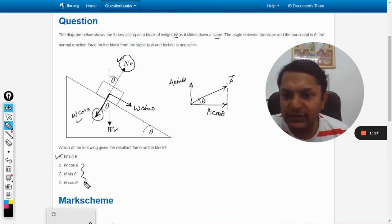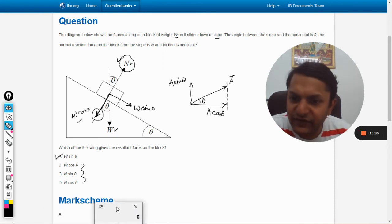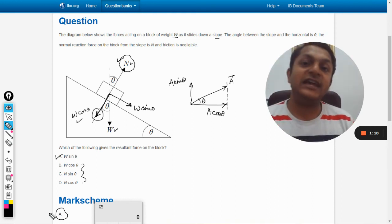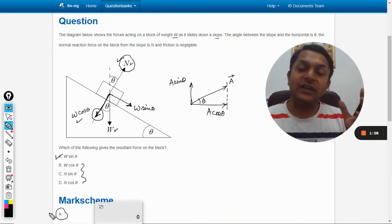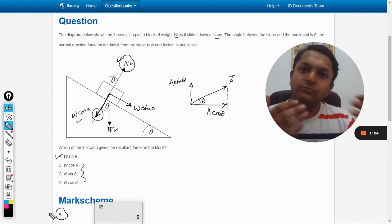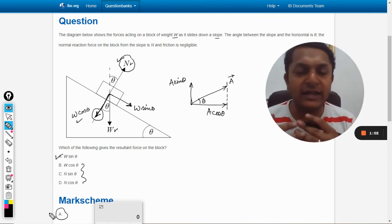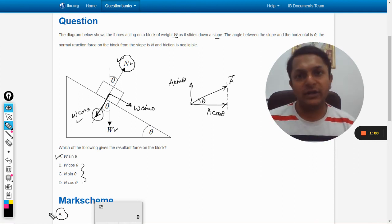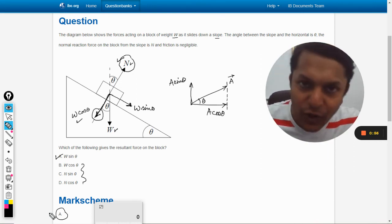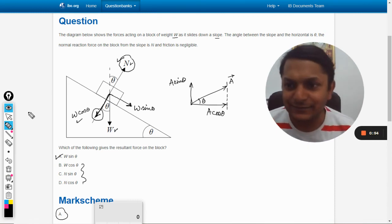Let us verify it from the mark scheme and yes the answer is A. So this is the explanation of when the block or the mass or the weight is placed on an inclined plane. This is how we do it. Even now if you have any problem please do let me know in the comment section. All the best. Bye bye.